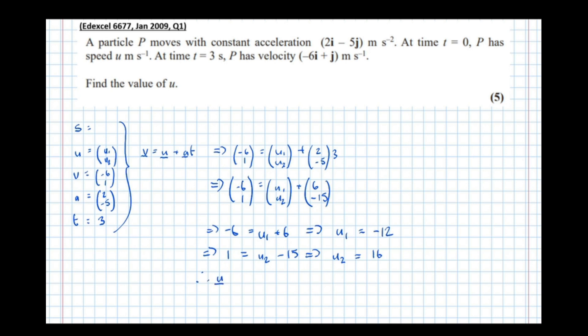Therefore the vector u = (-12, 16). However, look carefully—that's not what the question asked. The question said P has speed u meters per second, so it's not after the velocity, it's actually after the speed. Now we need to find the magnitude of u.